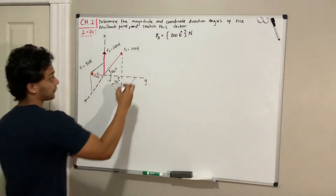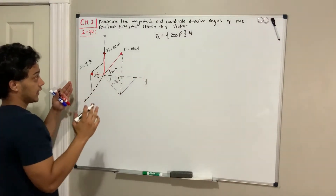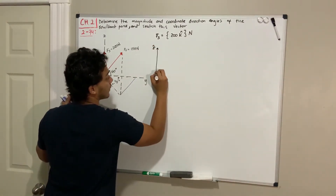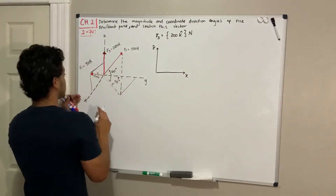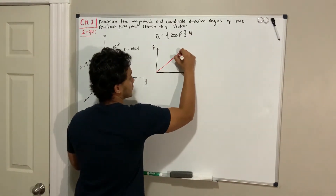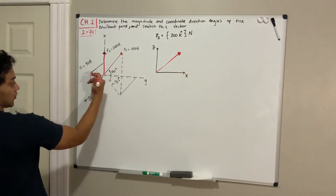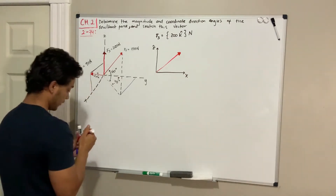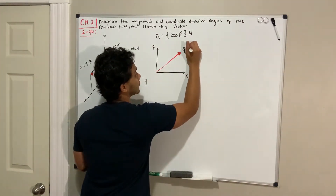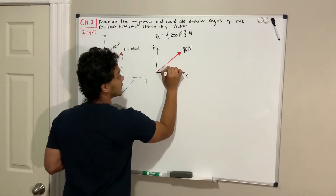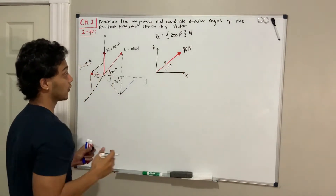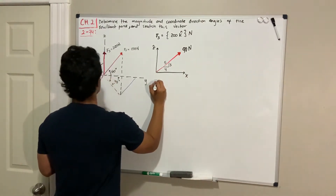Let's do F1. For F1, what I'd like to do is draw the 2D plane of the Z and X axes. This force goes into the positive of both of them — positive X going this way, and positive Z going up. We know the magnitude is 90 newtons and we're told this is a 3-4-5 triangle. By knowing this, we can start decomposing F1.